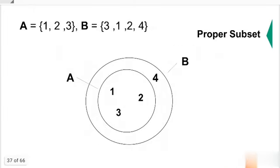This is a diagram that shows that A is a proper subset of B. How do we write it? A is a proper subset of B. It doesn't have the horizontal line. That means subset. But without the horizontal line, proper subset.